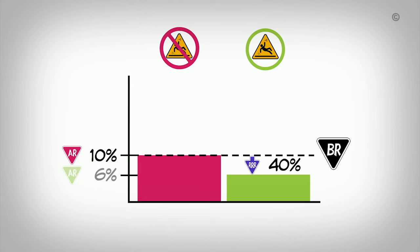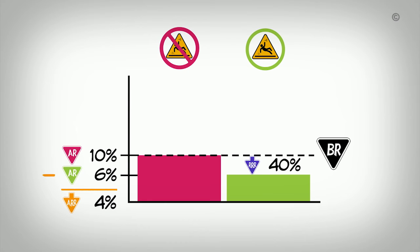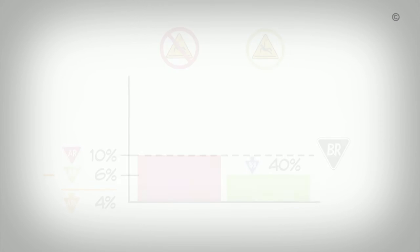Therefore, following the intervention, the intervention group's risk for a fracture will be 40% of 10%, which means the absolute risk in the intervention group will be 6%. To calculate the absolute risk reduction, we subtract the absolute risk of 6% in the intervention group from the absolute risk of 10% in the control group, which is 4%. In our second study, when the baseline risk for a fracture is 10% and the relative risk reduction remains the same at 40%, the absolute risk reduction for a fracture is only 4%.